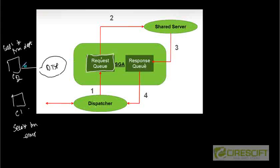Whatever result the shared server produces, it puts it into the response queue. So all the requests — SELECT * FROM emp, SELECT * FROM dept — are in the request queue. Whenever the shared server is free, it takes a command, executes it, and puts the result in the response queue. The dispatcher then pulls from the response queue and returns the result back to the client.